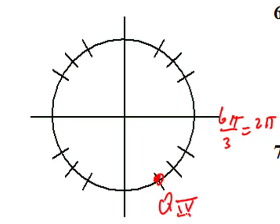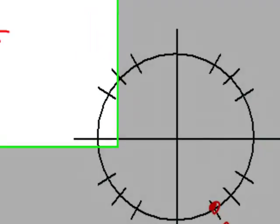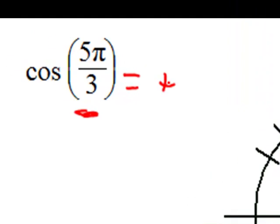And this is in quadrant four. So that means that the cosine value is going to be positive. We put a plus sign here because we know it's positive. We don't have to go back and rediscover that in any regard.